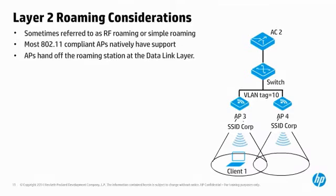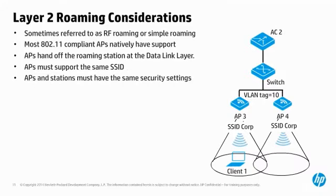APs can easily hand off client session information at Layer 2 with no special solution or configuration required. You must simply configure your AP deployment carefully as follows: APs must support the same SSID, since clients cannot change SSIDs seamlessly. All APs that support the SSID must use the same security configuration, as must the clients. And by definition, all APs must map the SSID to the same Layer 2 subnet or VLAN for Layer 2 roaming to be successful.